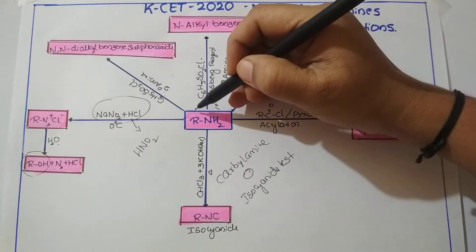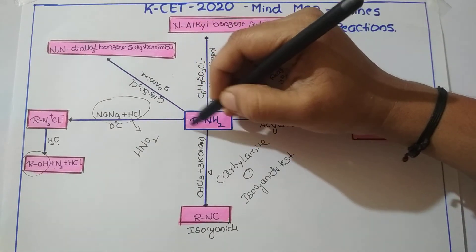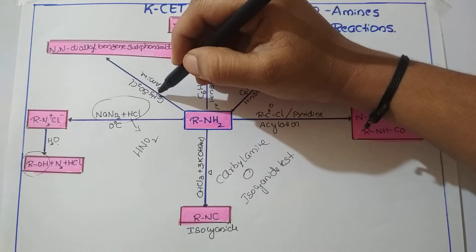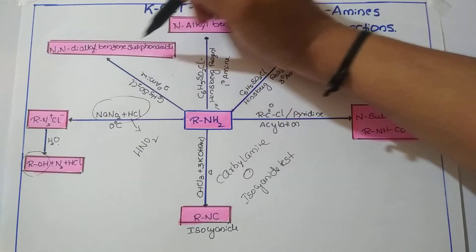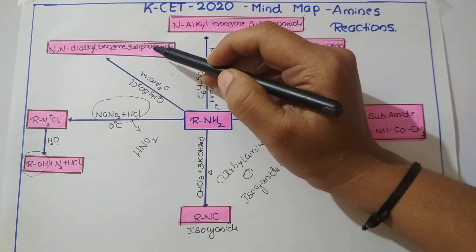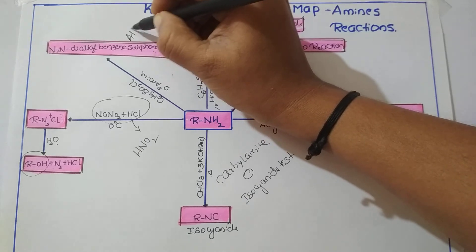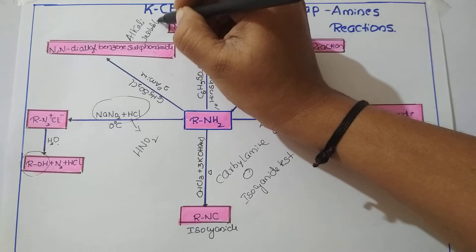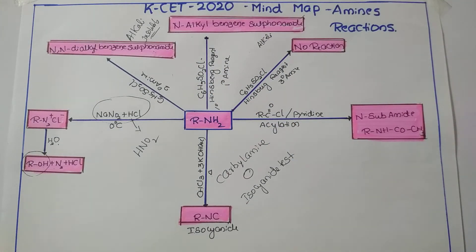When secondary amine is treated with the same Hinsberg reagent, we get N,N-dialkyl benzene sulfonamide. Here also a sulfonamide is formed, but when this compound is treated with alkali (sodium hydroxide), it is insoluble — it does not dissolve. So primary gives a soluble product, and secondary gives an insoluble product.